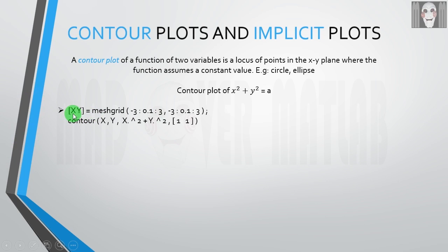On the left-hand side, I will write a matrix [X,Y]. It has two matrices X and Y. On the right-hand side, I will use the meshgrid keyword followed by parenthesis. The arguments to this function are two arrays.